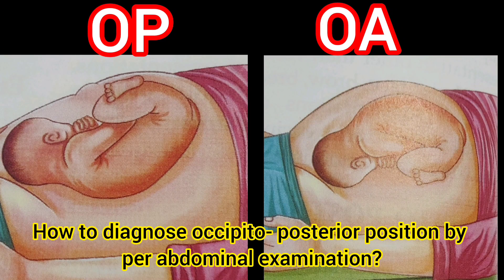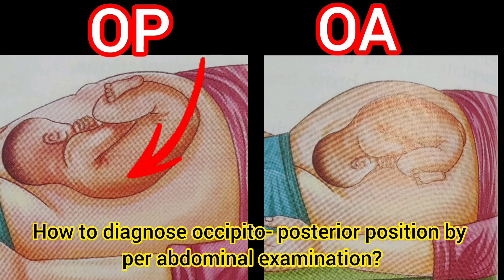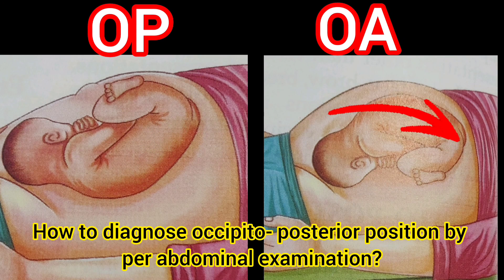In Occipitoposterior position, the fetal back is towards the flank and limbs are towards the midline, whereas in Occipitoanterior position, the fetal back is towards the midline and limbs are towards the flank.